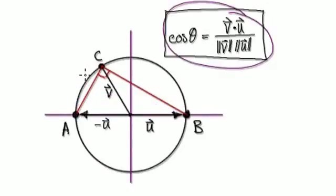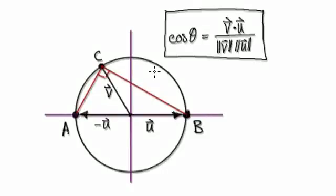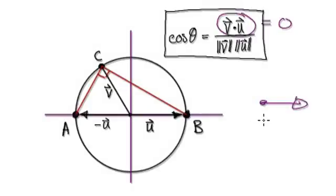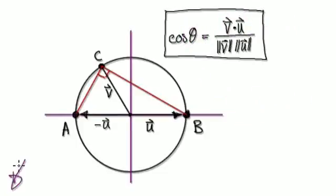Use your newfound knowledge to show that no matter where C is — here, here, here, wherever — the angle here will be 90 degrees. Remember from some of the early videos, to show that two vectors are perpendicular to each other, meaning 90 degrees, the dot product must equal zero. If you want to show that two vectors are parallel, then you need to make sure that the angle is either equal to 0 or equal to pi. Press pause and have a go.